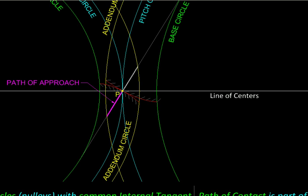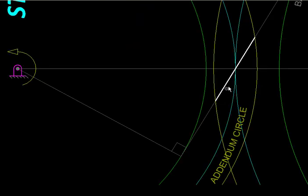While from the pitch point till the contact is lost, that part is called as the path of recess. The length of path of contact represents the length of the belt that is getting unwound during the contact.